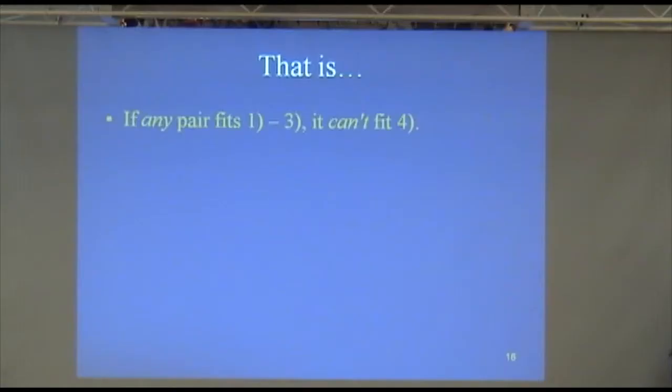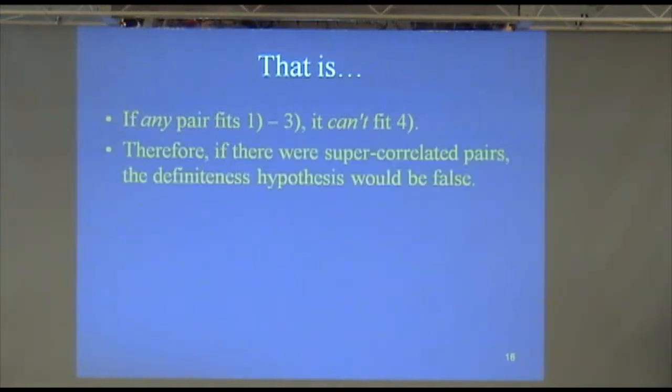What we just saw is that if any pair fits our rules 1 through 3, it can't fit rule 4. And that means that if there really were super correlated pairs, the definiteness hypothesis that comes from EPR would have to be false. It would lead to a contradiction. It would be impossible.